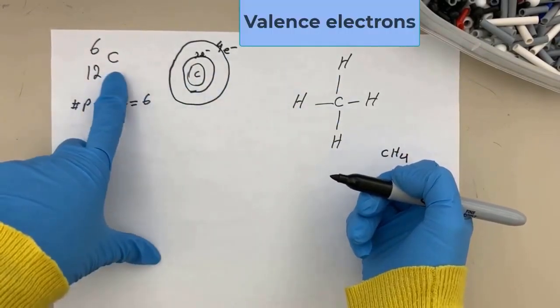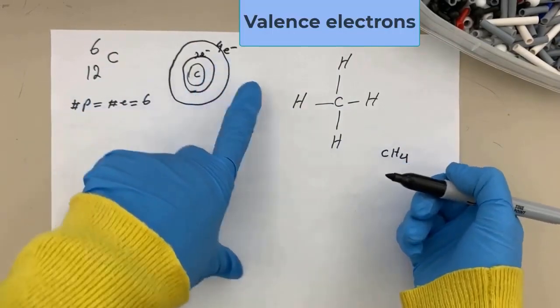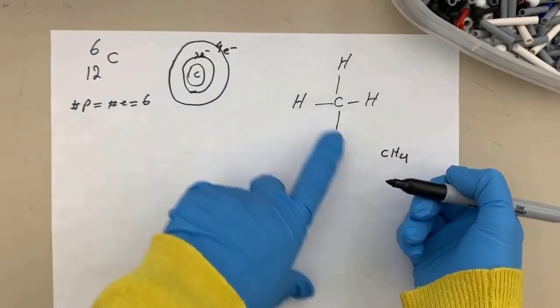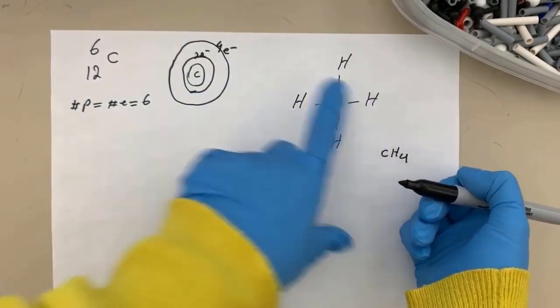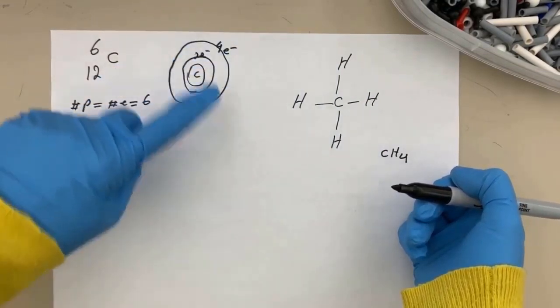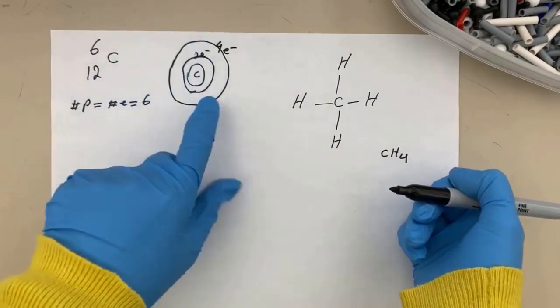That means carbon needs to make four bonds to fill its outermost shell.